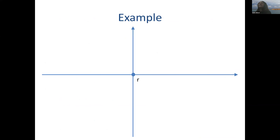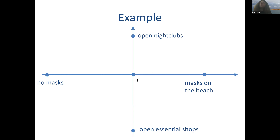Let's do an example. These slides build on pandemic-based thinking. Let's look at an example where our two axes are two approaches to fighting COVID. The two axes I want to think about are what is open and what is closed. My horizontal axis will be masks — going from no masks anywhere to having to wear masks everywhere. The vertical axis would be what is open, ranging from keeping only essential shops open to everything being open. There are many intermediate positions on both axes.